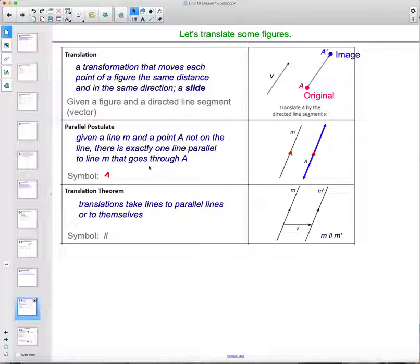Then we've got this parallel postulate. So given line M, point A that's not on the line, there's exactly one line parallel to M that goes through A. So we can't find any other lines parallel to M that also go through A. Parallel to M sure, you can get other lines parallel to M, but none that will also go through A.